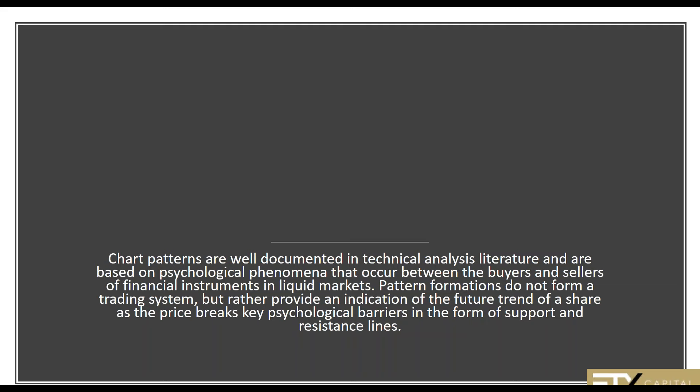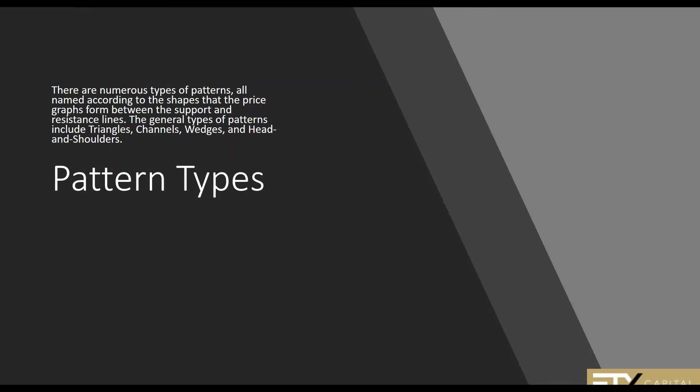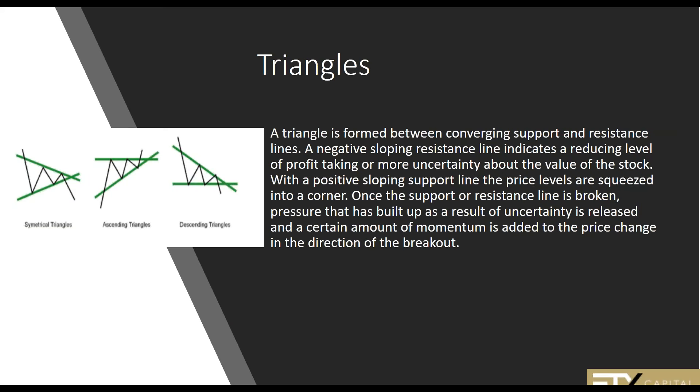Charts and patterns are all about being able to predict where there should be some market action or reaction — what price is critically important to the markets. There are numerous types of patterns, all named according to the shapes in the price graph that form between the support and resistance lines. The general types of patterns include triangles, channels, wedges, and head and shoulders — head and shoulders being one of the most well-known of them all.